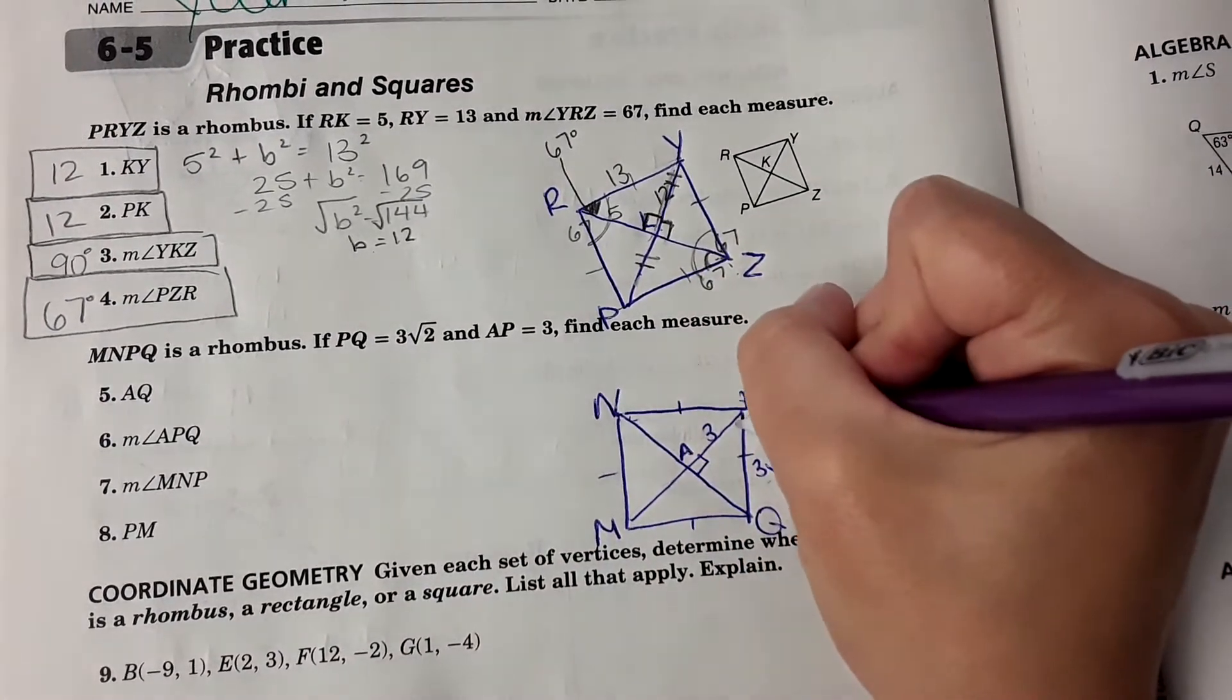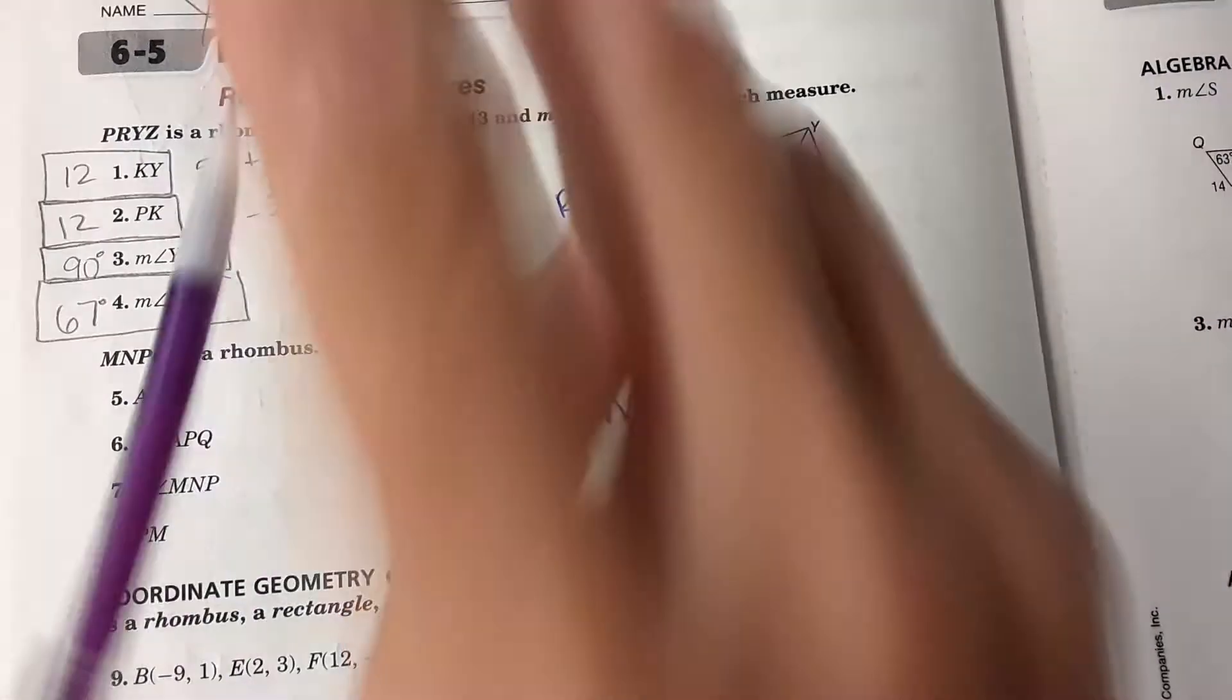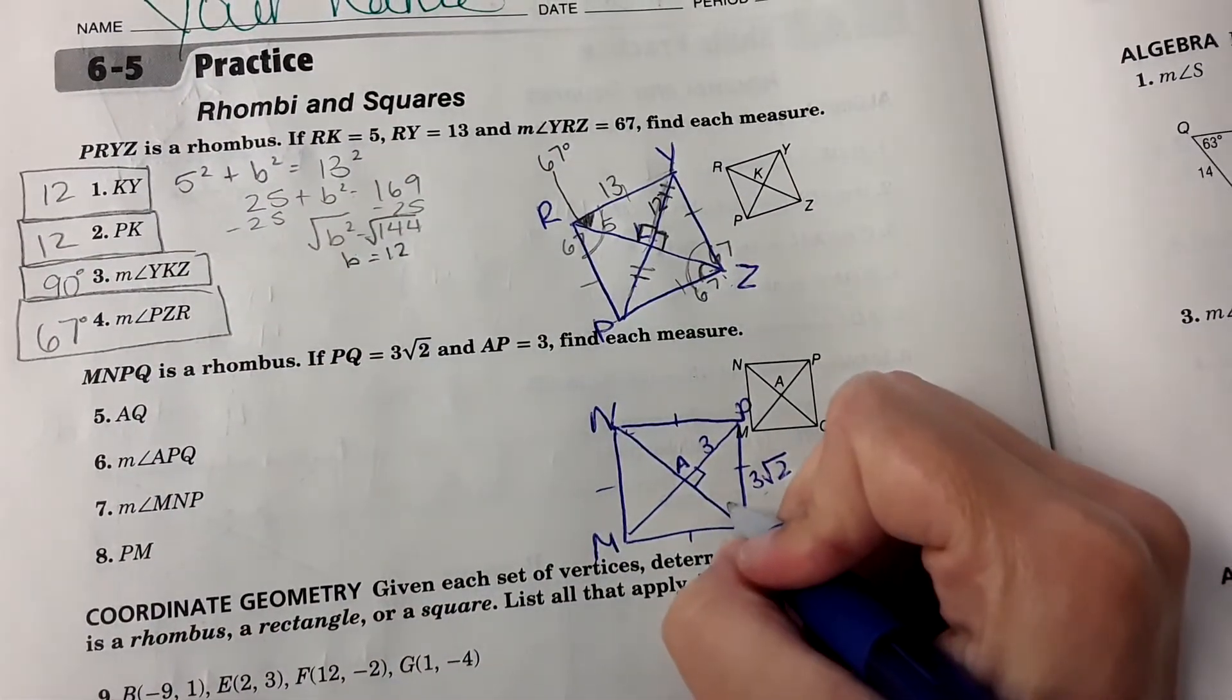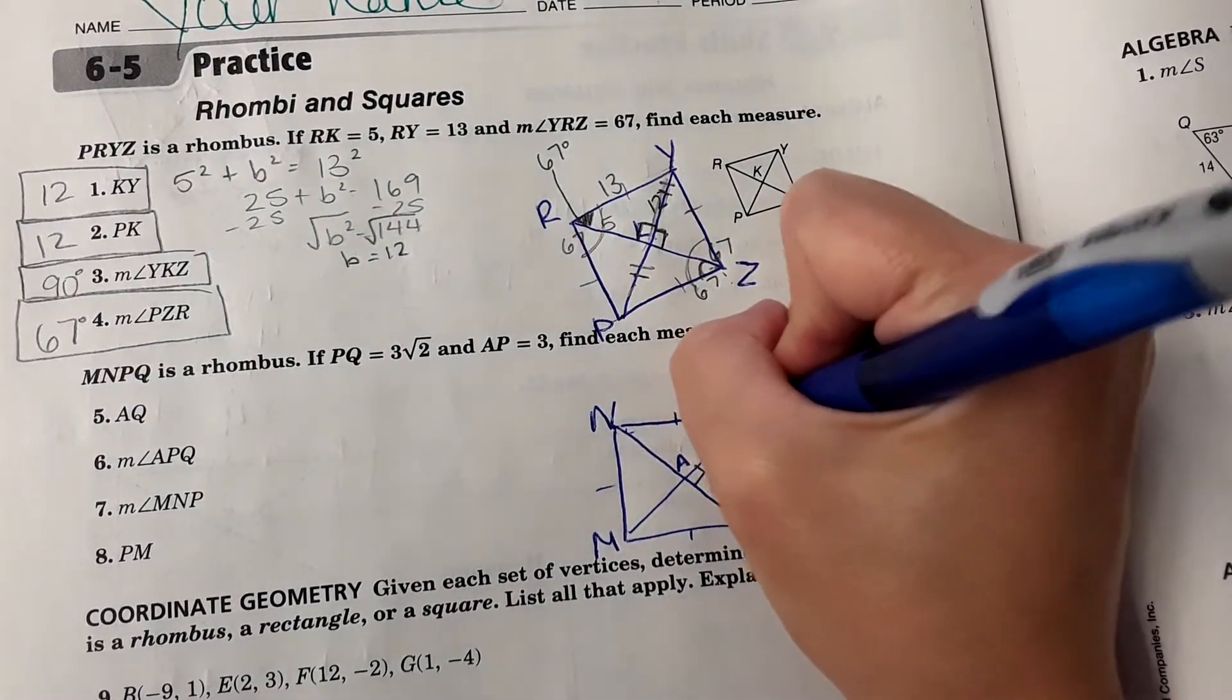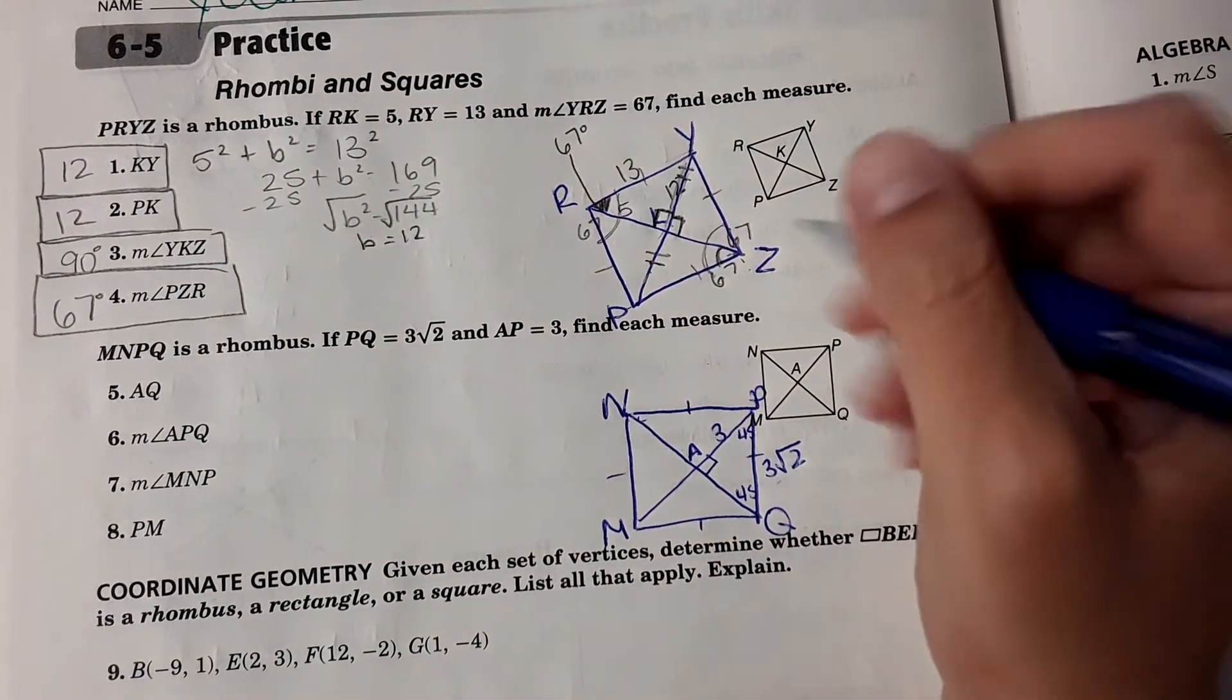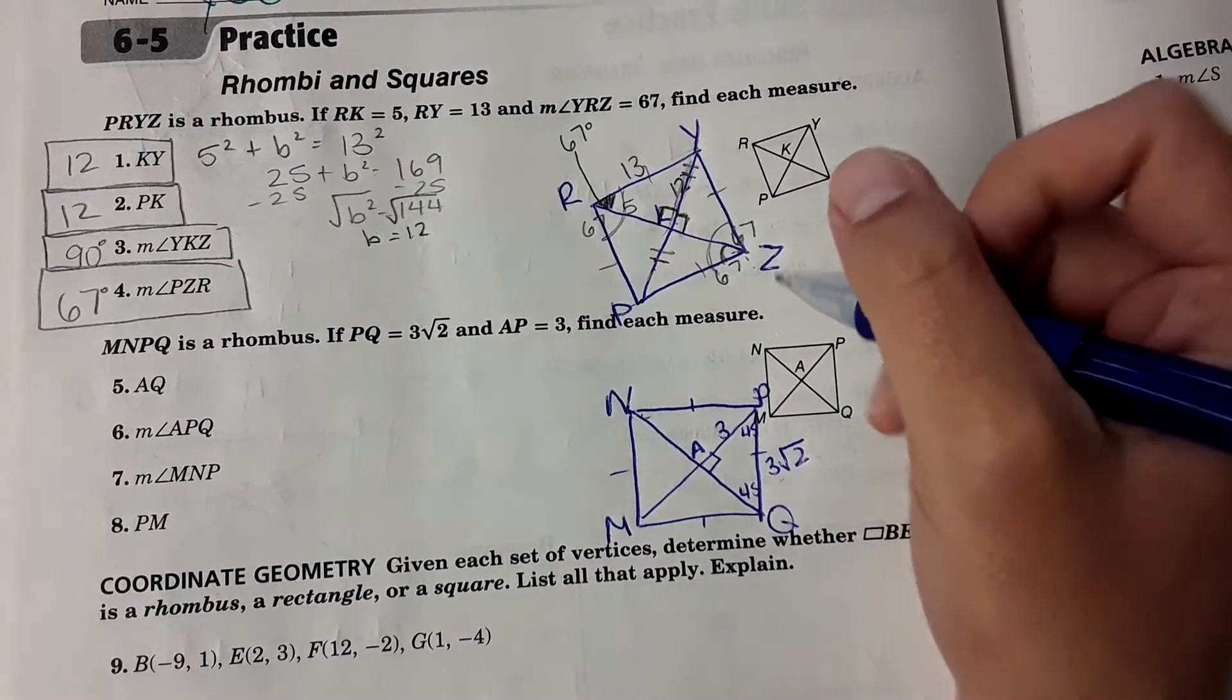They're hinting that this is a special right triangle. You haven't learned this, but this signifies that these angles here are 45 degrees and 45 degrees. So it's a square. So I'm telling you this is a square.